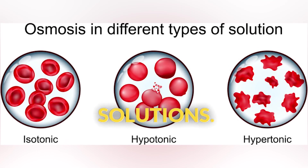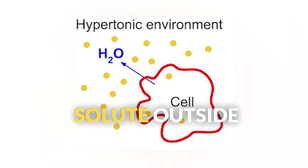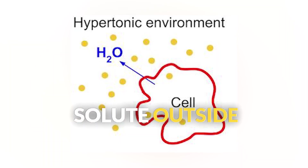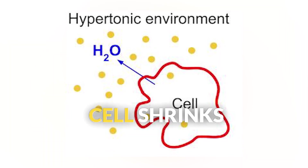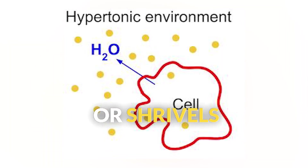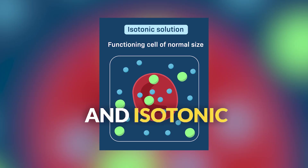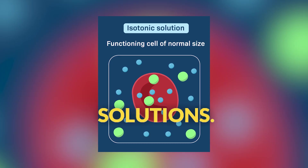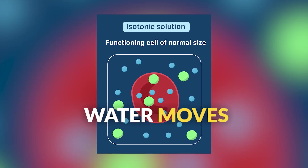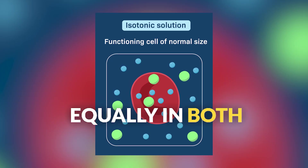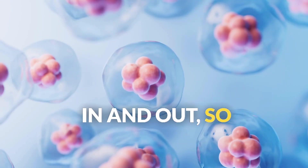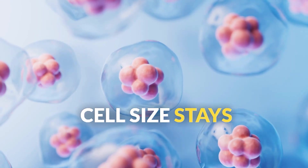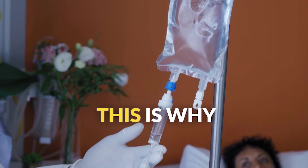In hypertonic solutions, with more solute outside, water moves out and the cell shrinks or shrivels. In isotonic solutions, water moves equally in both directions — in and out — so cell size stays constant.